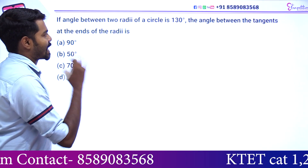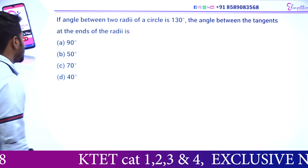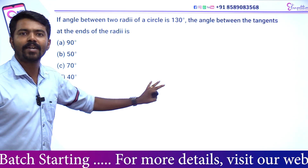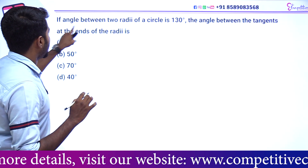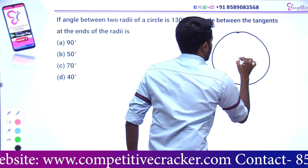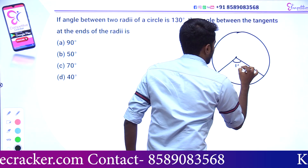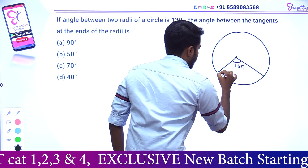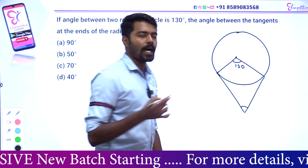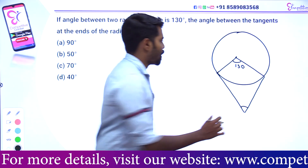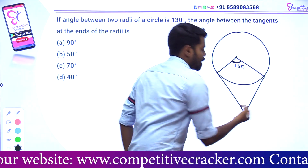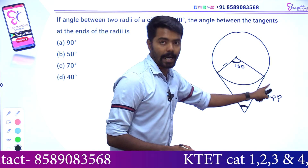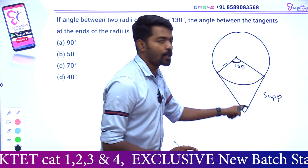If the angle between the two radii of the circle is 130 degrees, the angle between the tangents at the ends of the radii is dash. In the circle, there are two radii; the angle between them is 130 degrees. The angle between the tangents at the ends of the radii — the opposite angles are supplementary. The two totals are 180 degrees. So the answer will be 180 minus 130 equals 50 degrees.